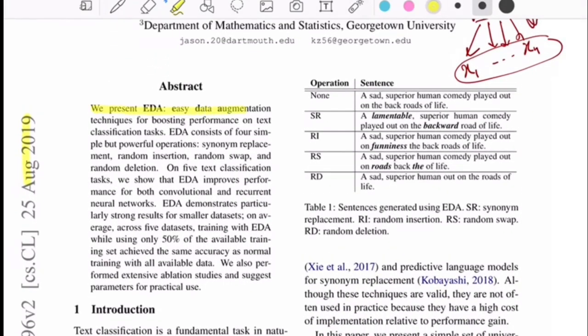We present EDA, easy data augmentation technique for boosting performance on text classification tasks. EDA consists of four simple but powerful operations: synonym replacement, random insertion, random swap, and random deletion. These are the four things that they apply as part of their augmentation technique. On five text classification tasks, they show that EDA improves performance on both convolutional and recurrent neural networks. EDA demonstrates particularly strong results for smaller datasets.